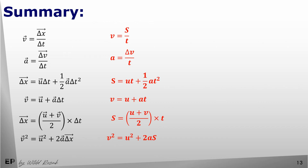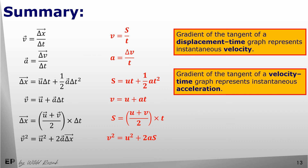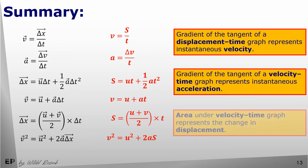To finish our summary, here are three important ways graphs are used in this topic: the gradient of the tangent of a displacement-time graph represents instantaneous velocity; the gradient of the tangent of a velocity-time graph represents instantaneous acceleration; and the area under the velocity-time graph represents the change of displacement.